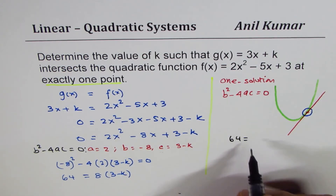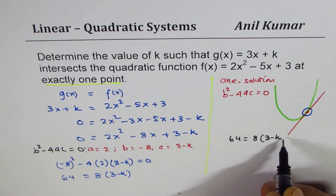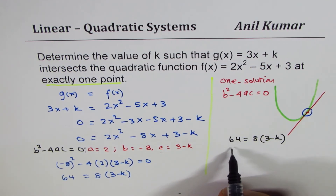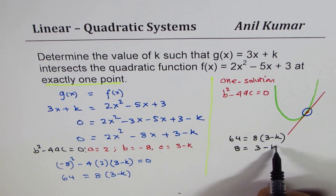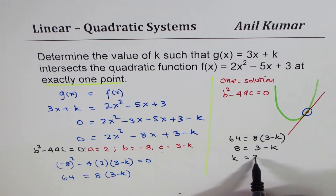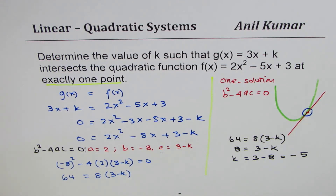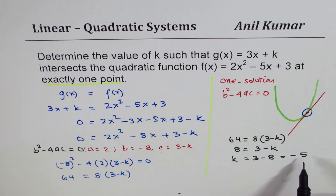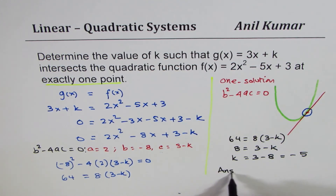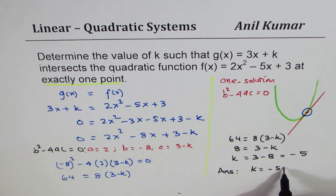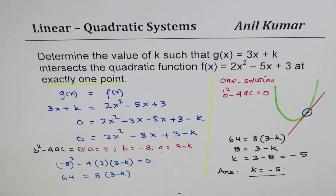We have 64 = 8(3 - k). Dividing both sides by 8 gives 8 = 3 - k. Rearranging, k = 3 - 8 = -5. So the value of k is -5. If k equals -5, the line and the parabola intersect at exactly one point. That is the answer to this question — I hope that helps, thank you and all the best.